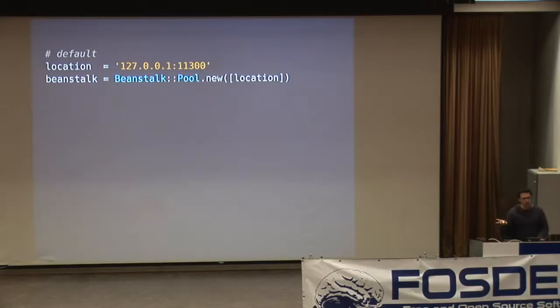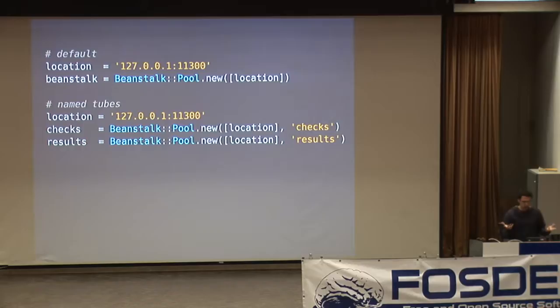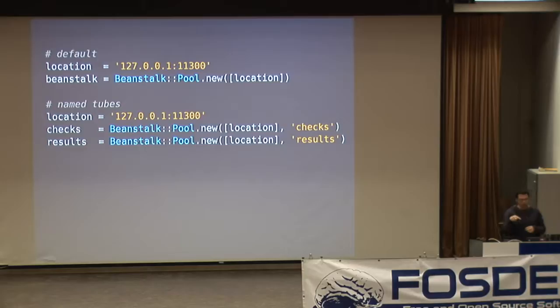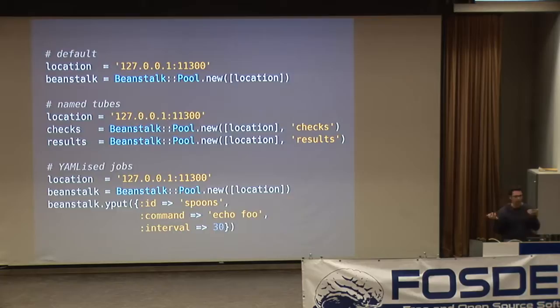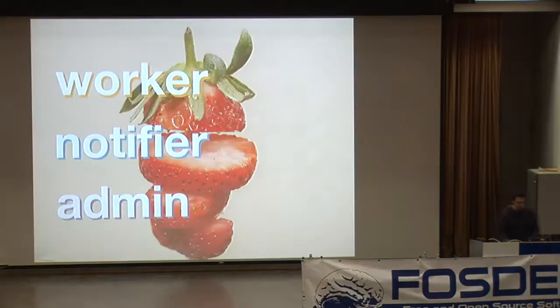BeanstalkD has a useful feature called tubes, which are basically named queues. We have a checks tube and a results tube, so we can put workloads on individual tubes and they never have to touch one another. Workers connect into the checks tube and notifiers connect into the results tube. The Ruby bindings for BeanstalkD also provide an easy way to serialize and deserialize Ruby objects when you put them onto the tube, so you can deal with Ruby objects at either side of the message queue.